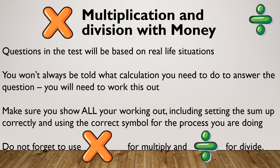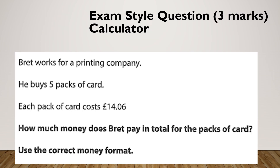It's going to be based on real life calculations, so we need to work out what the question is asking. Let's jump straight in with some calculator questions and see if you can work out if these are times or a divide. Brett works for a printing company. He buys five packs of courier. Each pack costs £14.06. How much money does he pay in total? Use correct money format. Pause and give it a go.